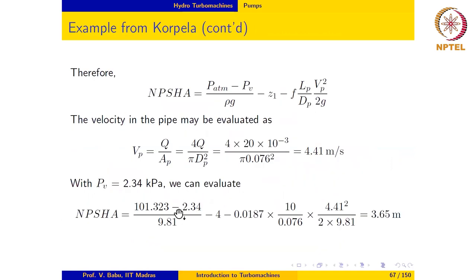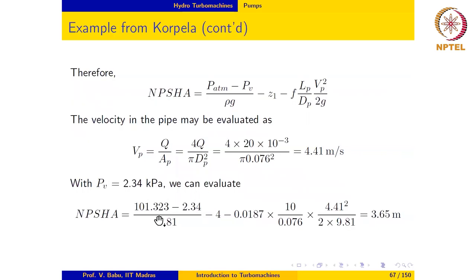Rearranging, the available NPSH = (P_atm − P_V)/(rho·g) − Z1 − head loss due to friction. Since the flow rate is given, the velocity in the pipe is Q/A_P = 4.41 m/s. The saturation pressure at 20°C from steam tables is 2.34 kPa. The available NPSH works out to 3.65 meters, which must be compared with the NPSH required specified by the pump manufacturer to ensure cavitation is avoided.